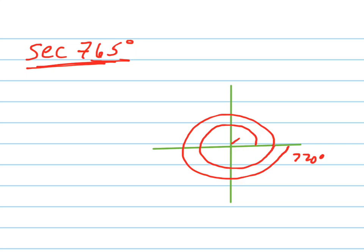And how much do I have left if I went 720 around? 45. I have 45 left. So that's my reference angle. 45 degrees is my reference angle.